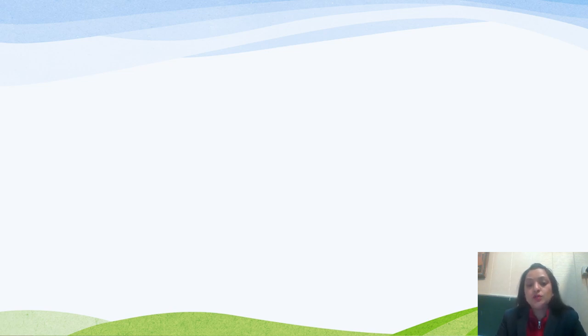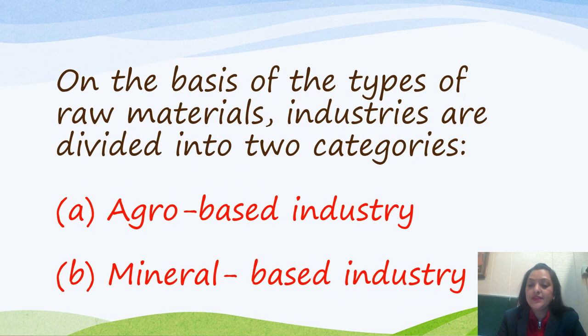Today we will study that on the basis of types of raw materials, industries can be divided into two categories: the first one is agro-based industry, and the second one is mineral-based industry. We will study these two categories in detail with their examples.